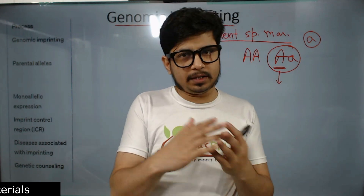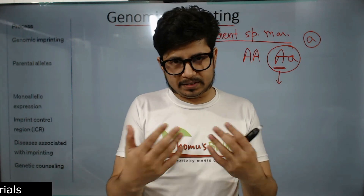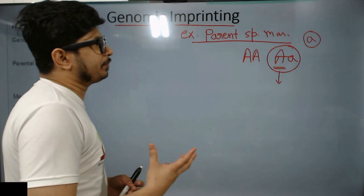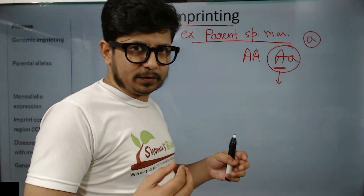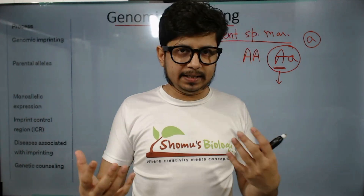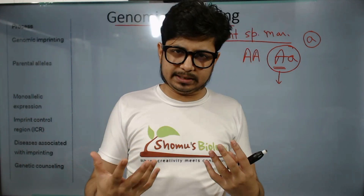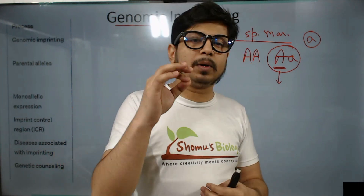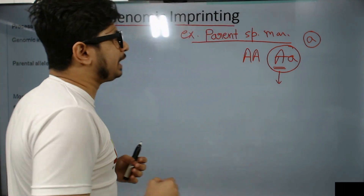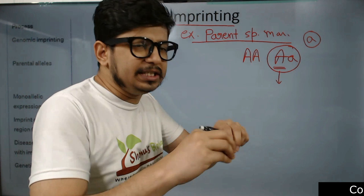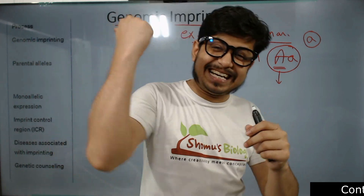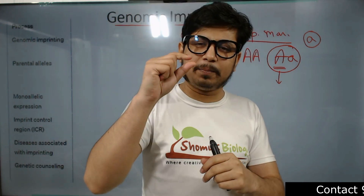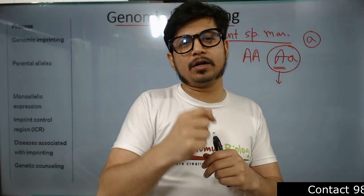Because the other gene will compensate for it. But the issue is that if I received both faulty genes, then I will show the disease. That's normal genetics — that's our understanding. But what happens is that sometimes some genes are tagged with one particular pattern of expression.